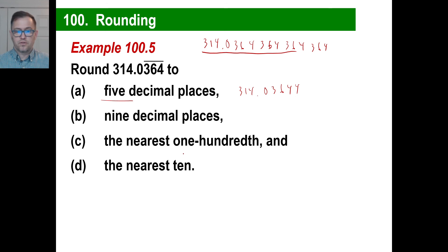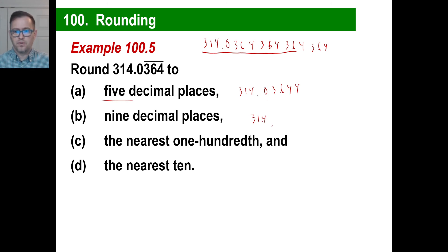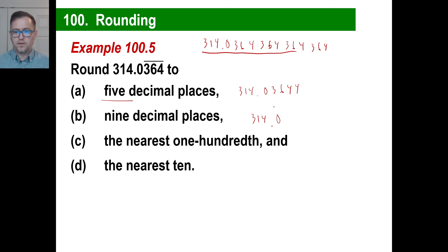The nearest 100th? Well, look at our decimal — we have 314 of course. The 0 is our 10th. Then we have the 100th — there's a 3 in there now. But we look over and that's a 5 or greater, so 1 hundredth would be 314 and 4 hundredths.